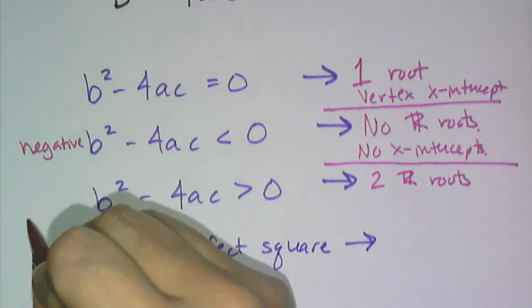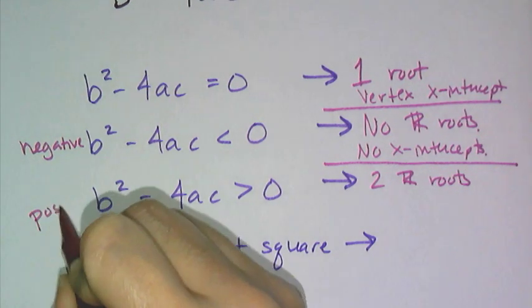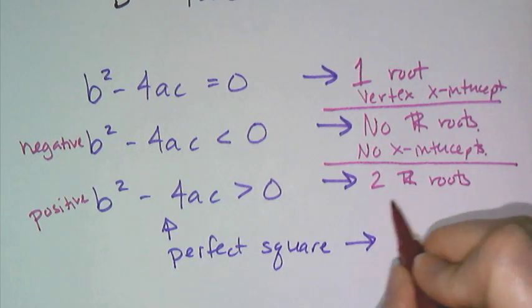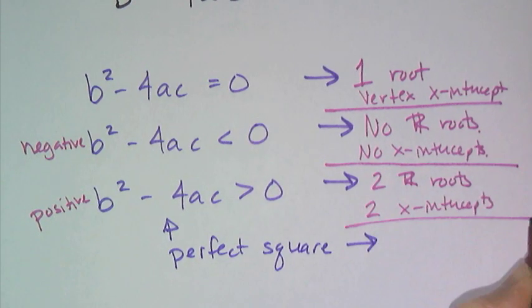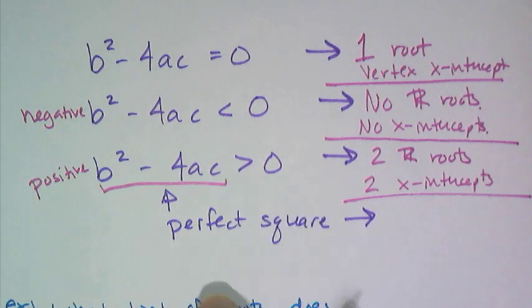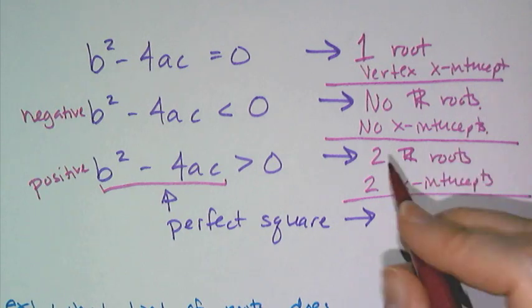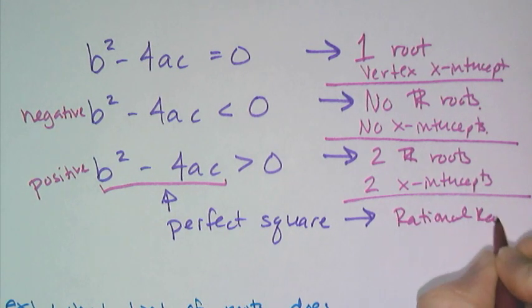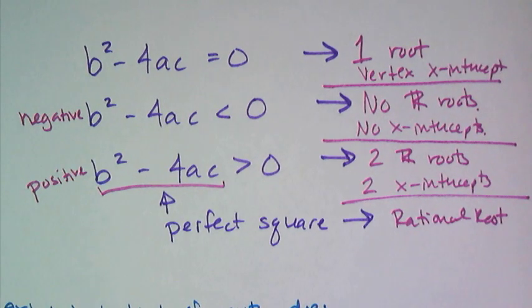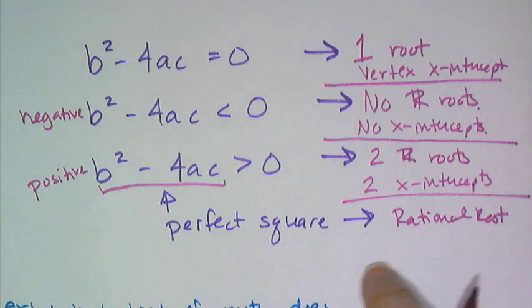So if b squared minus 4ac is greater than 0 or positive, it means I'm going to get two real roots or two x-intercepts. Now I can tell a little bit more, because if b squared minus 4ac is a perfect square, not only do I get a real root, I get a rational root, which means the square roots in the expression all drop away and I can be left with a half, a third, 15 over 27, whatever, just something that's radical free.